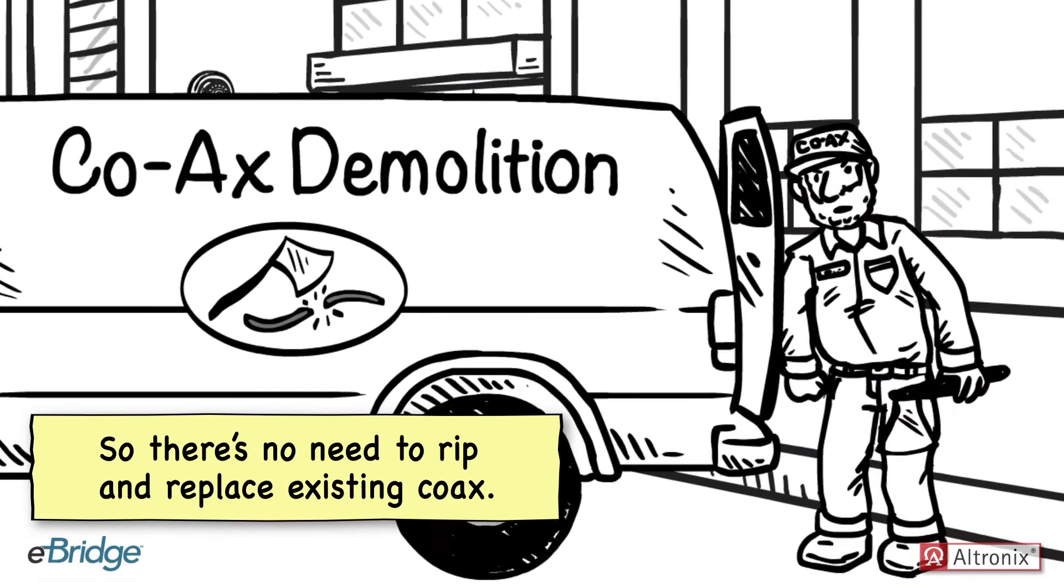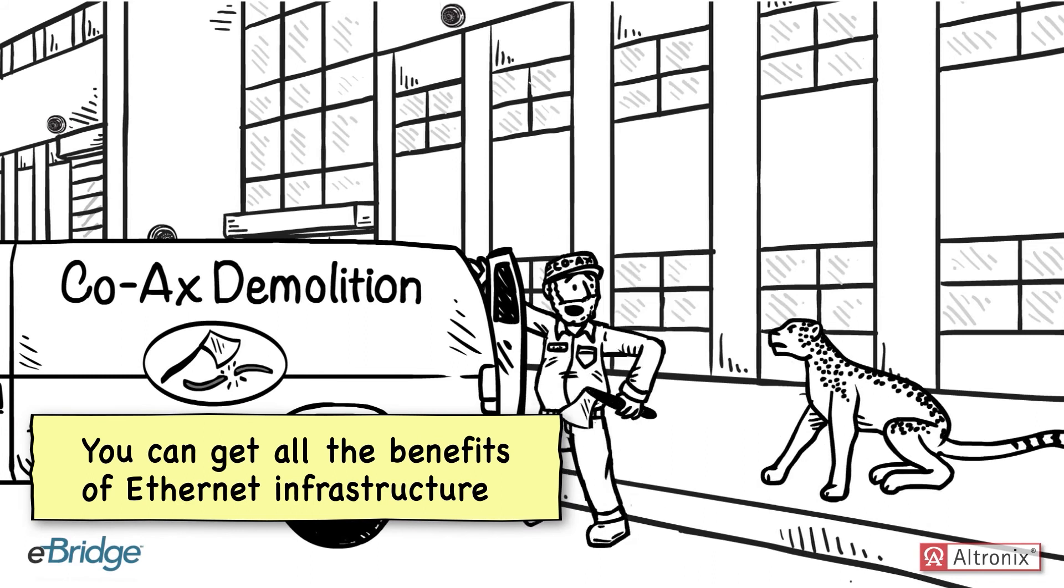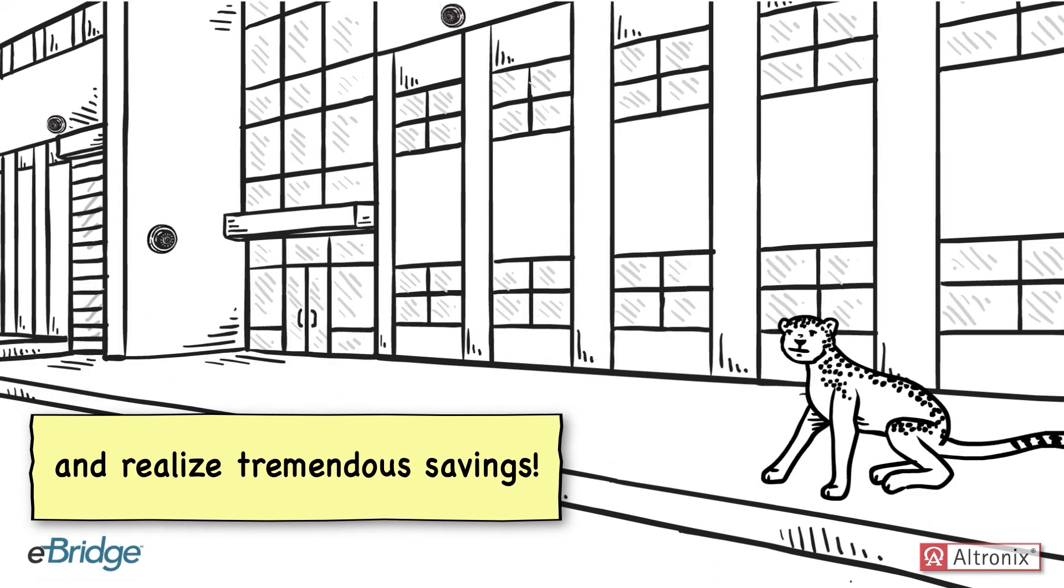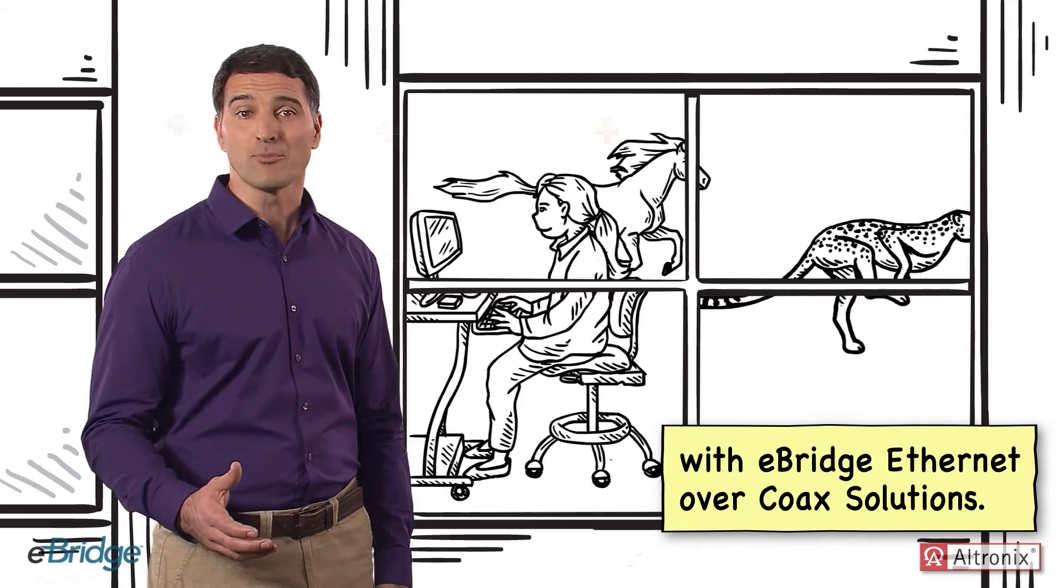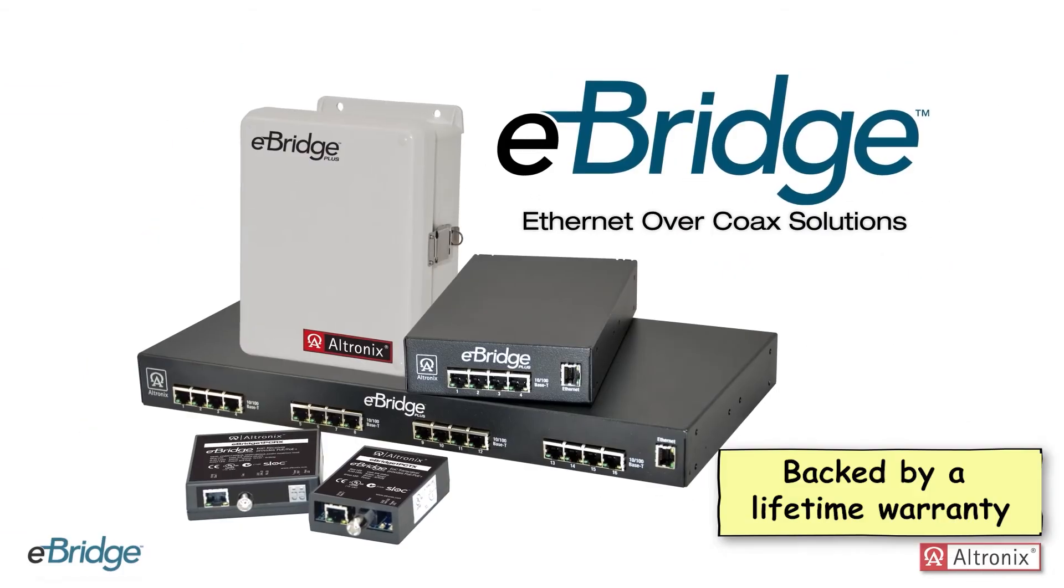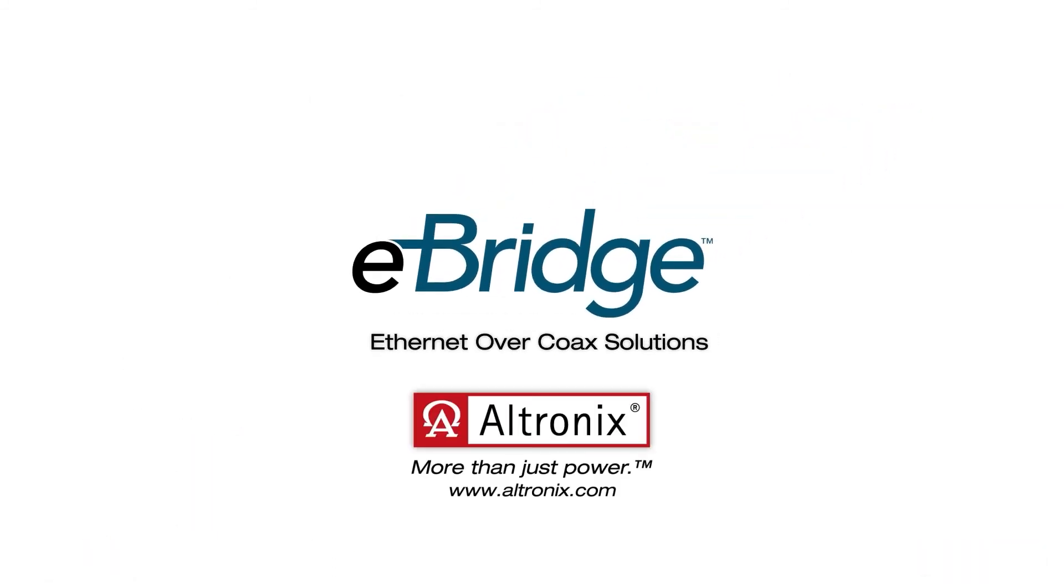So there's no need to rip and replace existing coax. You can get all the benefits of Ethernet infrastructure and realize tremendous savings. Make the move to a network platform with eBridge Ethernet over coax solutions. Backed by a lifetime warranty from the company that delivers more than just power. Altronix.